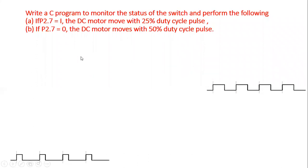The problem statement: write an 8051 C program to monitor the status of a switch and perform the following. The switch is connected to P2.7. If it is one, the microcontroller should produce a 25% duty cycle. If it is zero, the microcontroller should produce a 50% duty cycle as output.